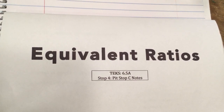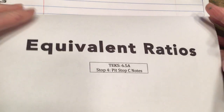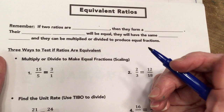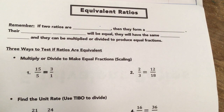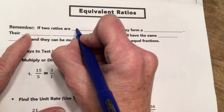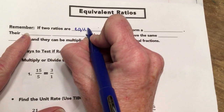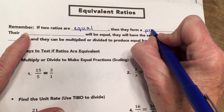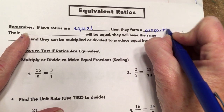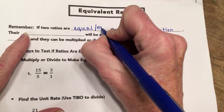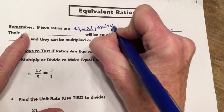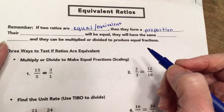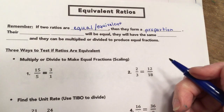In this video we're going to be talking about equivalent ratios. In our previous video we talked about proportions. Proportions are made up of ratios that are equal — if two ratios are equal, which is another word for equivalent, then they form a proportion. We use these terms interchangeably.